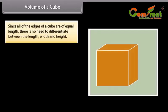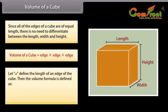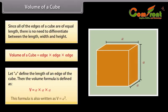Since all edges of a cube are of equal length, there is no need to differentiate between the length, width, and height. The volume of a cube is determined by multiplying the length of three edges. Let A define the length of an edge; then the volume formula is V = A × A × A, also written as V = A³.